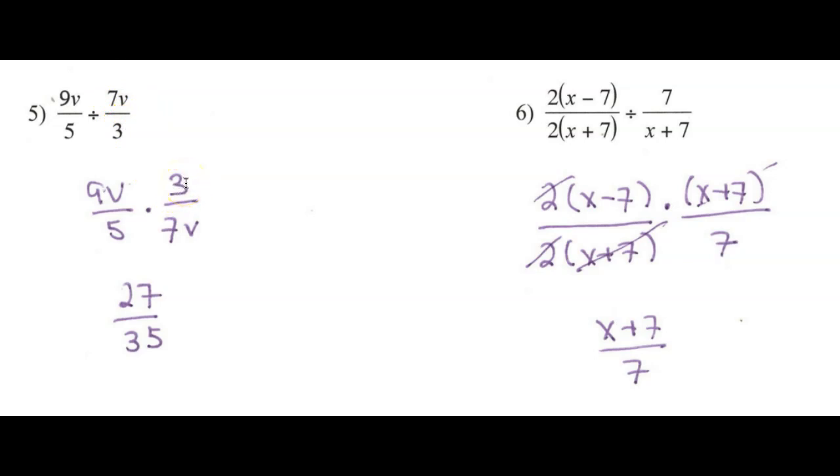So I'm going to have 3 over 7v. I'm going to be able to cancel my v's. I'm going to get 27 in the numerator and 35 in the denominator.